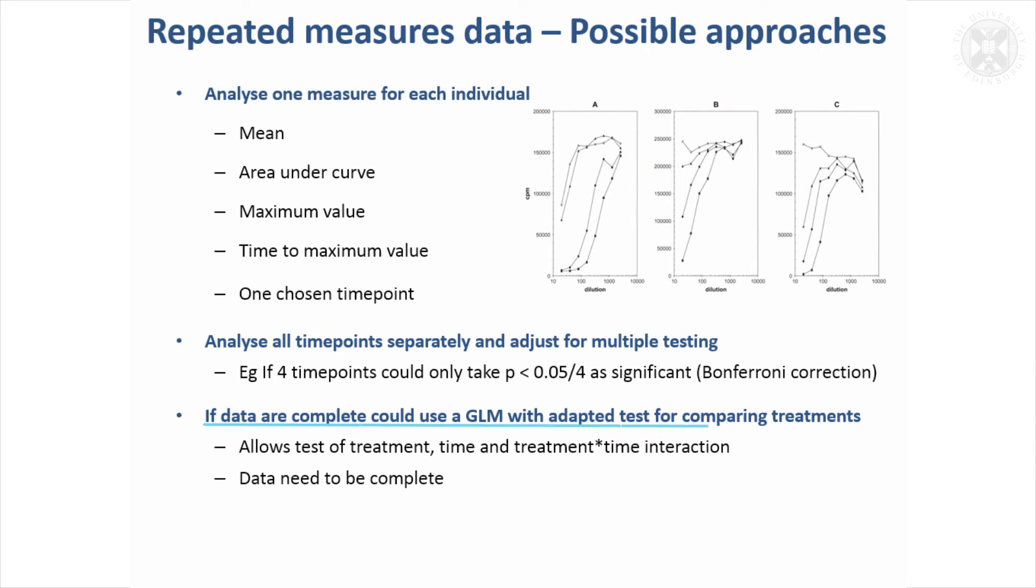If the data are complete, you can use a general linear model. But you would need to make sure you adapt your test for comparing the treatments to ensure they're compared using variability that occurs between the individuals and not treating the observations as independent across time. It really can't be done if the data are not complete. There are packages that will allow you to do this properly for complete data - repeated measures ANOVA as an option.